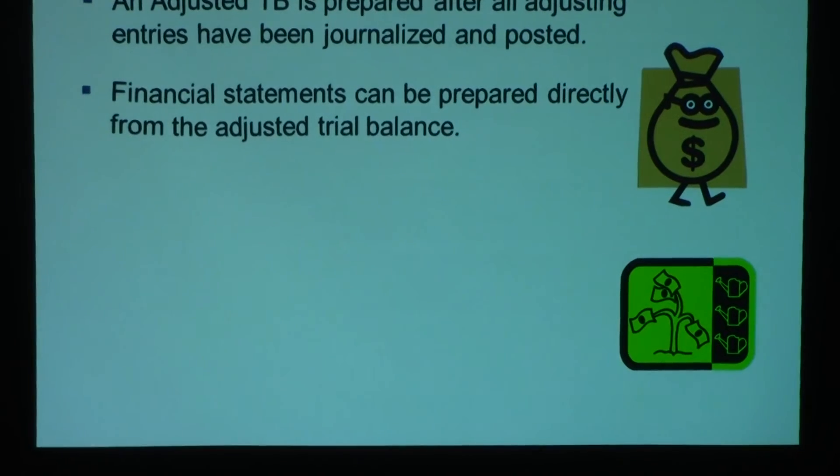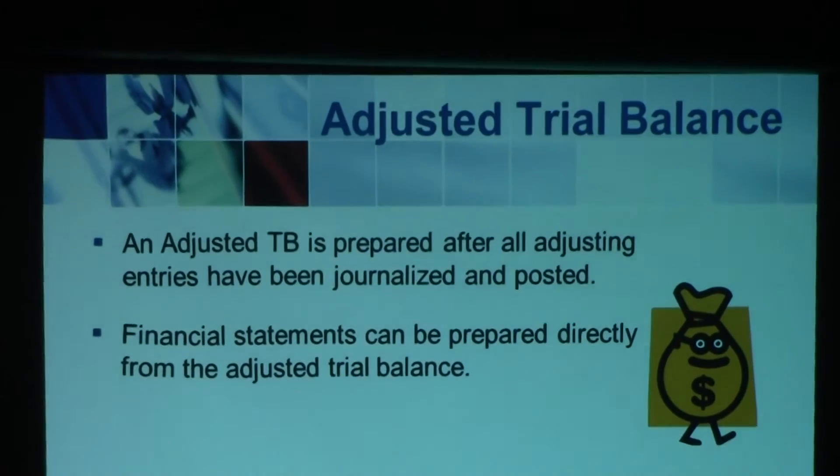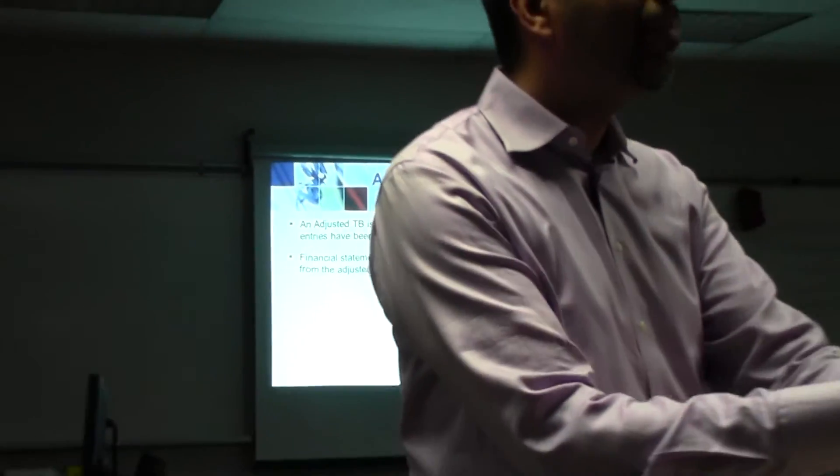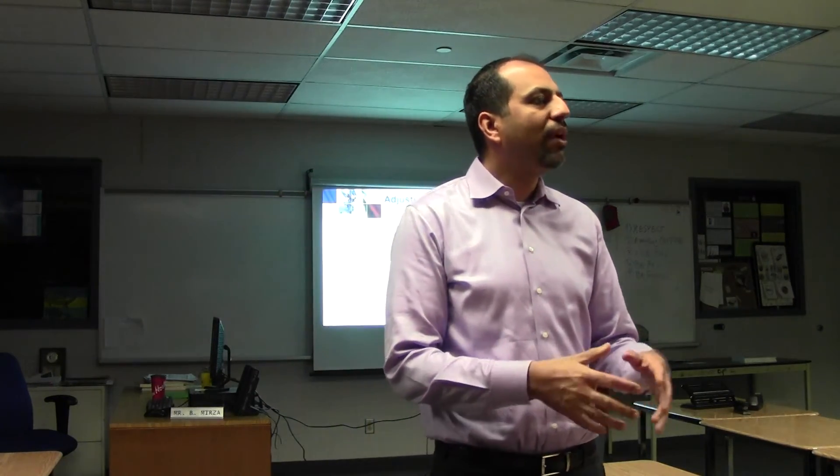Once you have finished all adjustments, you move on to prepare an adjusted trial balance. The adjusted trial balance is the final trial balance before you enter information into the balance sheet and income statement. When using software such as Mirza Books, there is no separate adjusted trial balance — the trial balance is simply updated with all adjusting entries, so the updated trial balance is your adjusted trial balance.